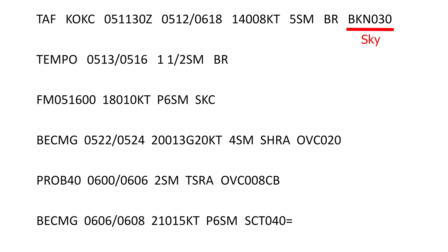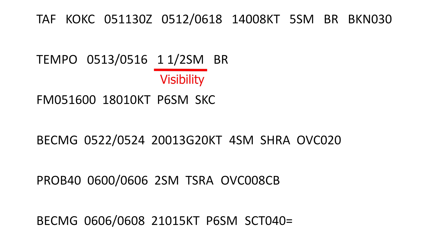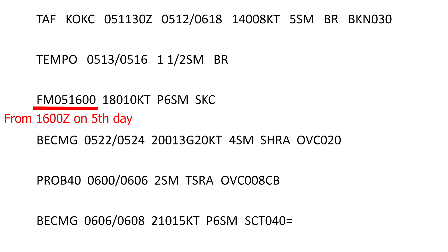Next is forecast sky condition. In our case we have broken cloud cover at 3,000 feet above ground level. The next period block starts with the abbreviation TEMPO, which means a temporary fluctuation in weather expected to last less than an hour. So this would read: temporary on the 5th of the month from 13 to 16 Zulu time, visibility of 1.5 statute miles with mist. The next time block starts with the letters FM, which stands for FROM and denotes a rapid and significant weather change typically within an hour.